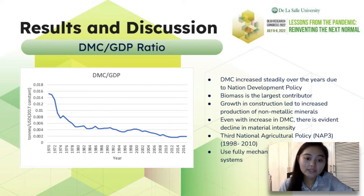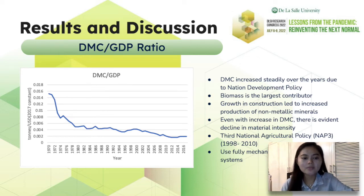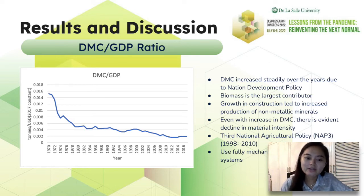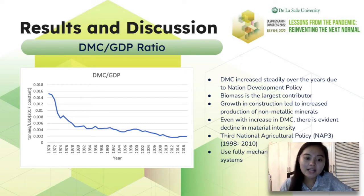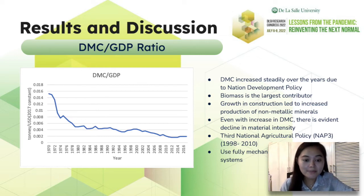This shows that over time, the increase of GDP is greater than DMC, meaning there is lesser demand for materials to achieve the same GDP. In other words, the resource efficiency of Malaysia has improved over the years due to factors such as development of technology and less material-intensive industries. Malaysia also set the third national agricultural policy, which includes increasing productivity by using fully mechanized and automated production systems and processes.